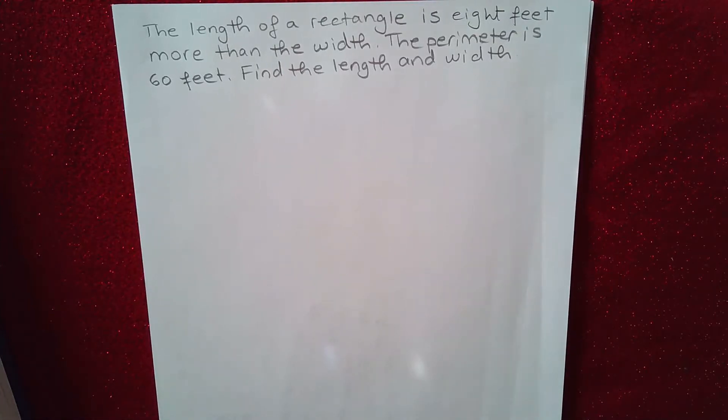The length of a rectangle is eight feet more than the width. The perimeter is 60 feet. Find the length and the width.